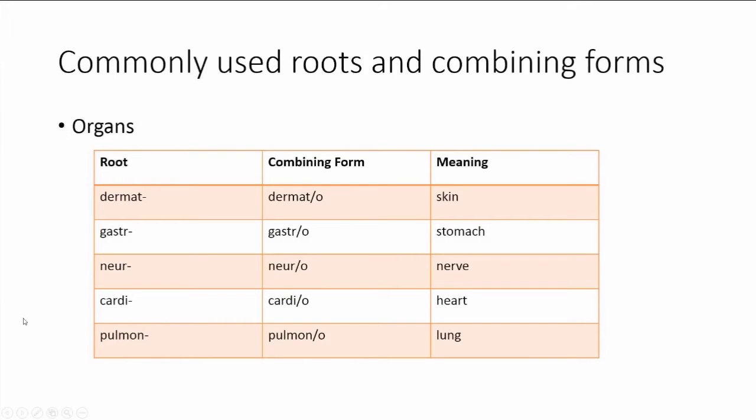This is a table of the most commonly used roots and combining forms. So we see here we have the root dermat. By adding the backslash o, it is now the combining form dermato, but both have the same meaning as skin, because remember that the backslash o is only used to make the whole entire word easier to pronounce. It does not change the meaning of the word.